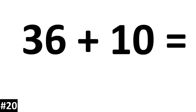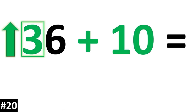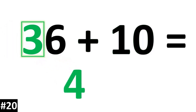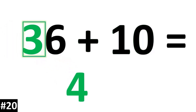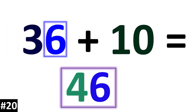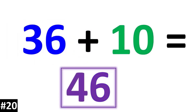36 plus 10: the tens digit of 36 is a 3. Going up by 1, it becomes a 4. The ones digit stays the same. So we have a 4 followed by a 6: 46.